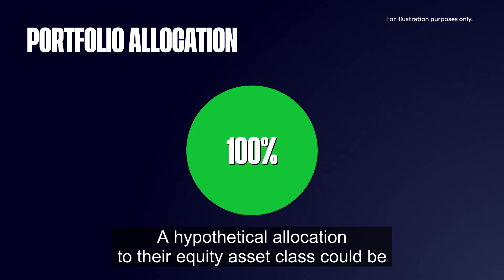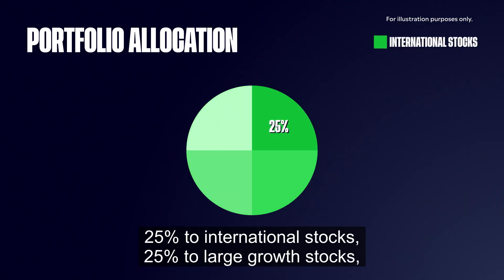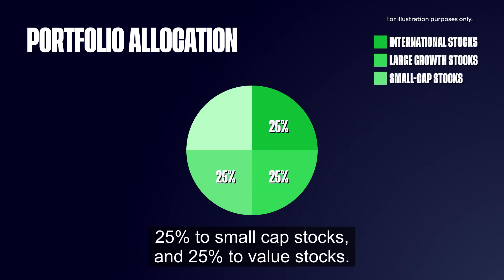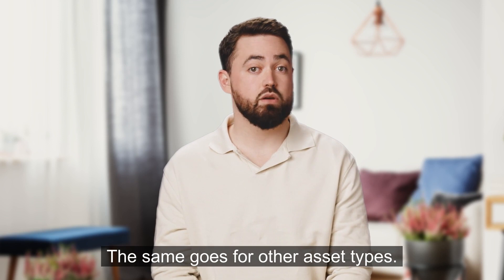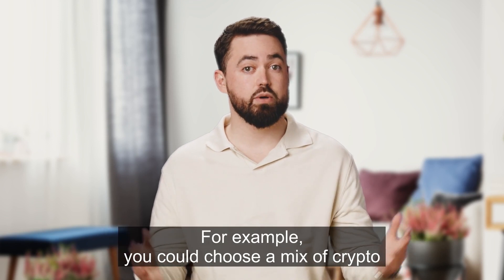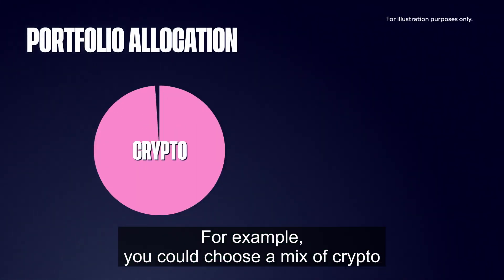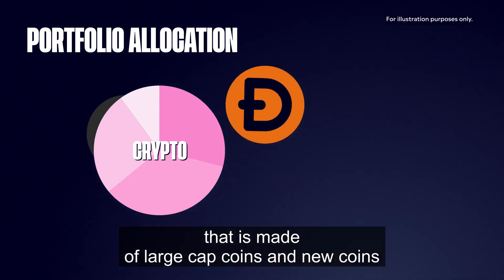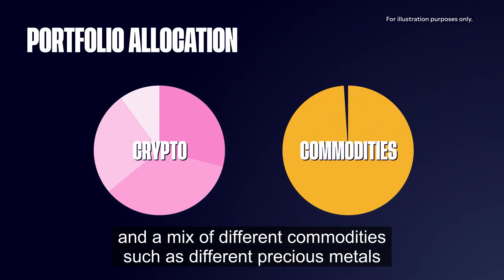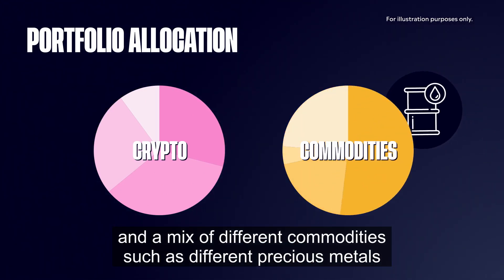A hypothetical allocation to the equity asset class could be 25% to international stocks, 25% to large growth stocks, 25% to small cap stocks, and 25% to value stocks. The same goes for other asset types — for example, you could choose a mix of crypto made of large cap coins and new coins, and a mix of different commodities such as precious metals and energy commodities.